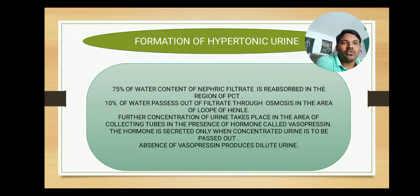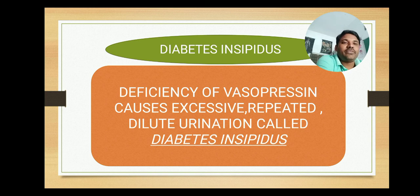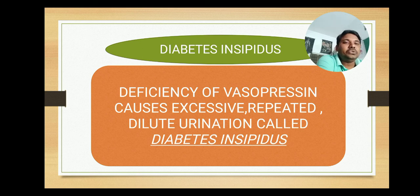When there is no need to concentrate urine, the hormone vasopressin will not be produced. It is produced only when there is a need to excrete concentrated urine. A disease called diabetes insipidus leads to more urination and is caused due to the deficiency of vasopressin. Without vasopressin, the urine is not concentrated, leading to excessive repeated dilute urination — that is diabetes insipidus.